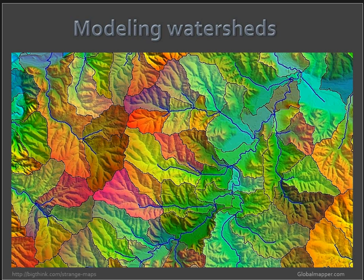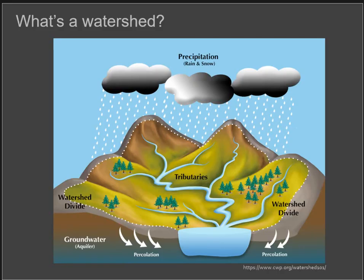Hi everybody, we're going to talk about modeling watersheds, particularly how to do that in GIS. First, we need to talk about what a watershed is because we need to figure out what kind of inputs we might use in a GIS to help define one. Watersheds are defined by a basin with precipitation quantities - rain, snow, overland flow, groundwater flow, percolation, ground cover types, pervious and impervious surfaces - but for our purposes it really boils down to location and elevation.